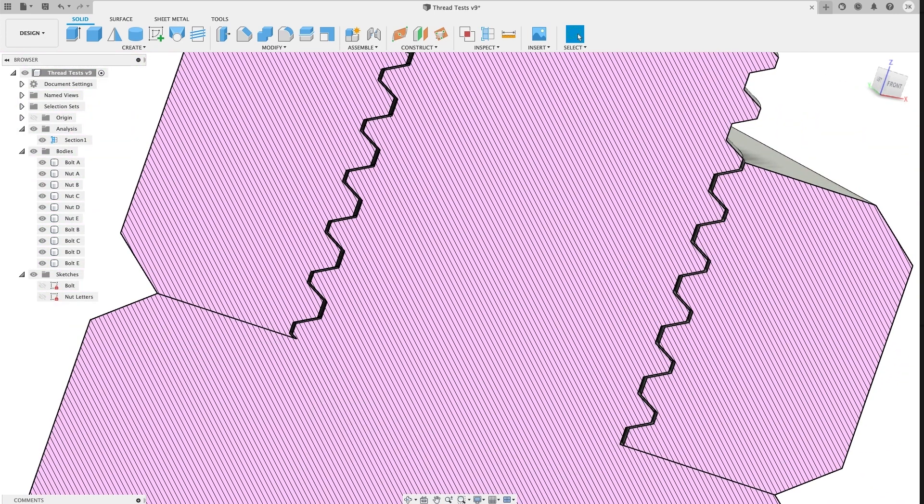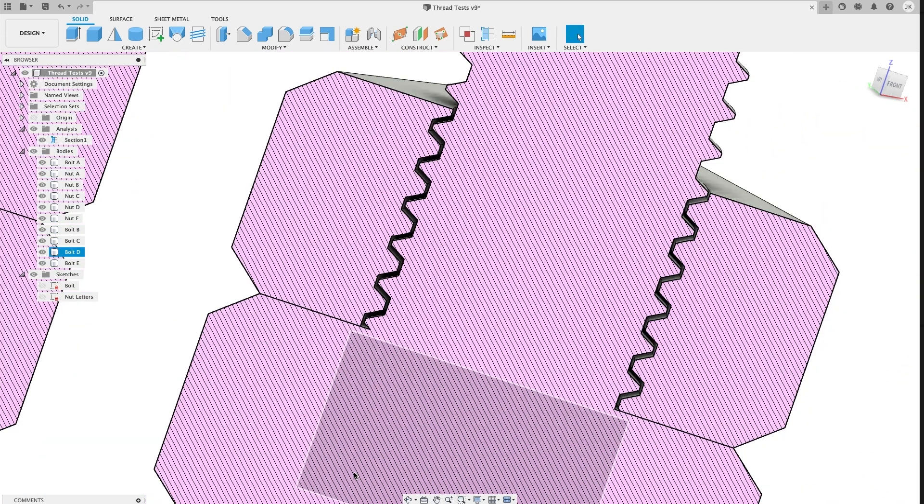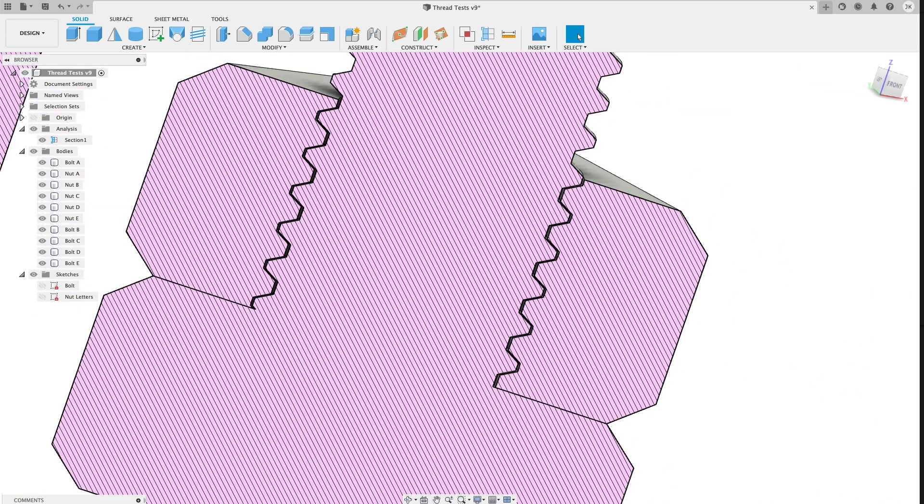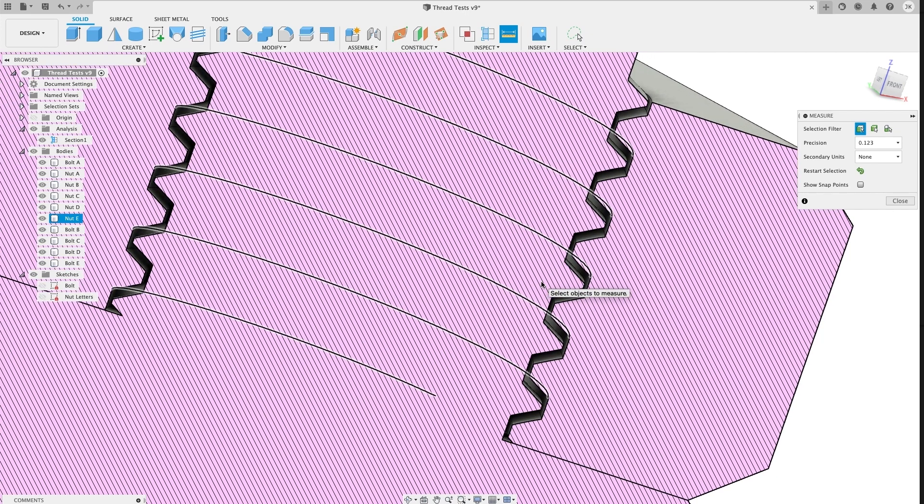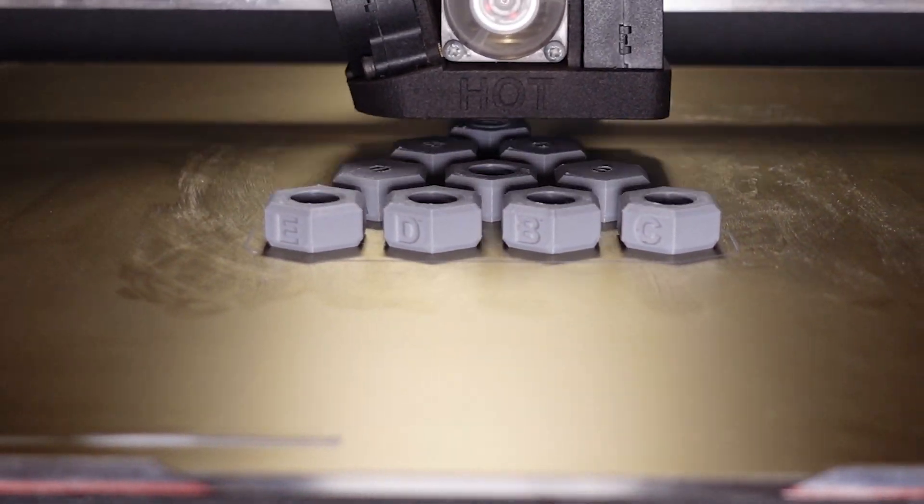Keep in mind that this is in addition to the clearance that the thread tool already creates. So really, this is close to something like 0.25 mm, which is a pretty big gap. Time to print these out and test them.